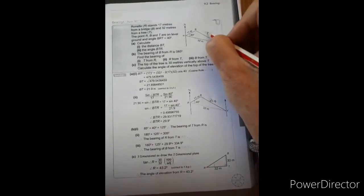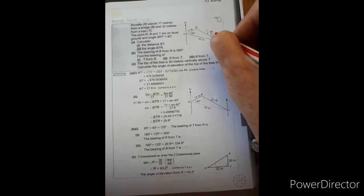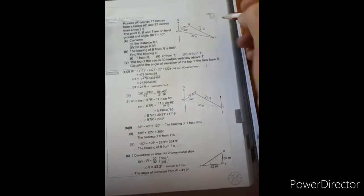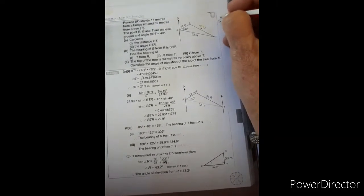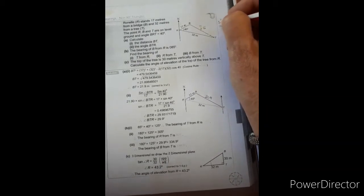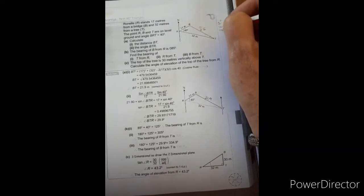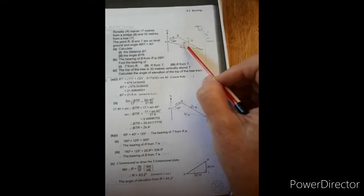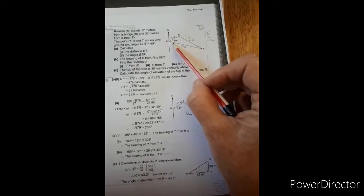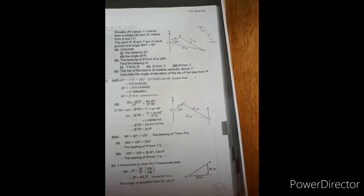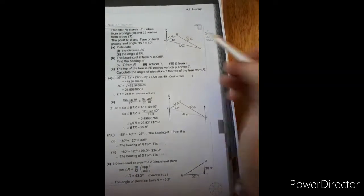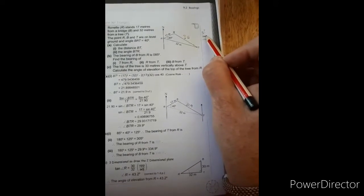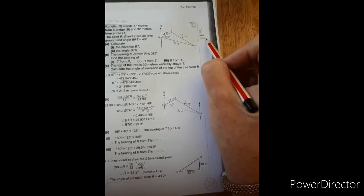The distance BT is asked, so that is a side. Now remember people, if a side is asked, you can use the sine or the cosine rule. I always check whether I can use the sine rule, but if you look at that drawing, I've got no full pair. So even if I have half a pair, it is not going to help me. So I cannot use the sine rule. I must use the cosine rule.